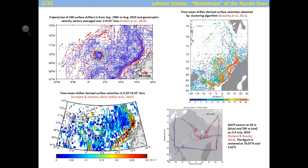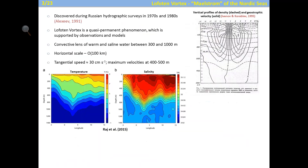The velocities exceed about 30 centimeters per second, and the phenomenon appears to be a permanent feature in the Norwegian Sea. Ship-borne ADCP measurements at two depths, 44 meters and 700 meters, show synoptic velocities exceeding about half a meter per second, with a very strong anticyclonic gyre located in the center. The vortex was discovered back in the 1970s and 1980s during Russian hydrographic surveys and is now also supported by recent satellite observations, in-situ observations, and ocean models.